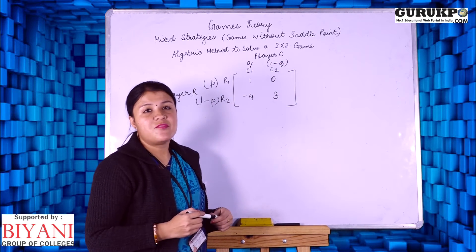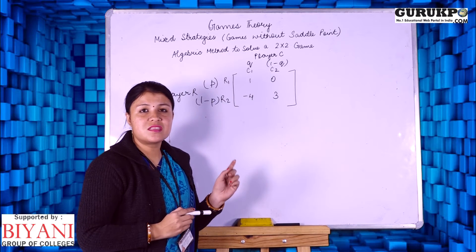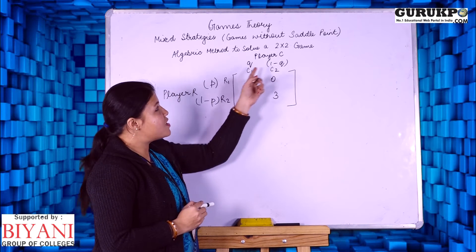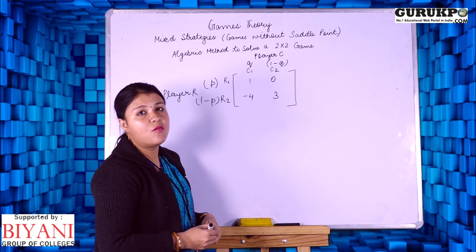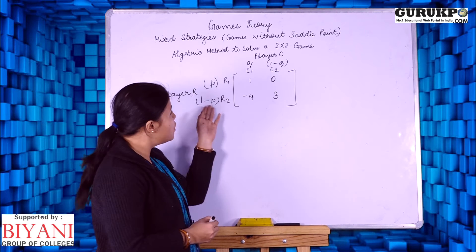In game theory, we have to find out three things: strategy for row player, strategy for column player, and value of game. First we will find out strategy for row player.